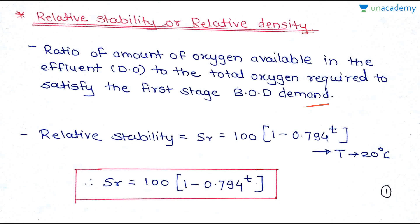Generally, within 5 days microorganisms consume around 60 to 70 percent of organic matter. Microorganisms first decompose carbonaceous biodegradable matter and then nitrogenous biodegradable matter. This is shown in the BOD graph covered in the previous lesson: first stage BOD, second stage BOD, and ultimate BOD, where L0 is ultimate BOD and YT is the BOD met in a given time. First stage BOD refers to carbonaceous matter getting oxidized — that is the carbonaceous demand.